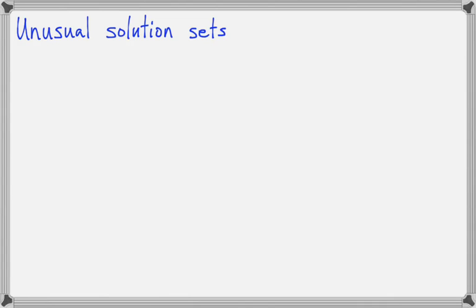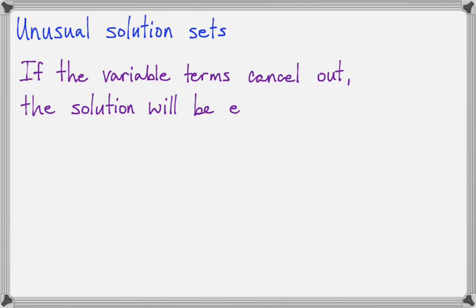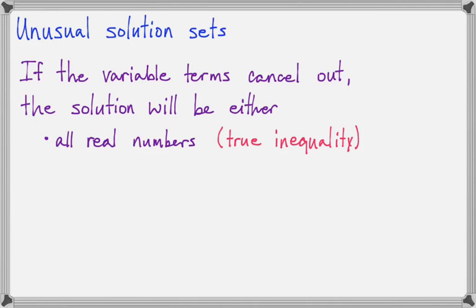In this lesson we're going to talk about unusual solution sets for inequalities. Here's the deal: if you're solving an inequality and your variable terms cancel out, then the solution will either be all real numbers in case you get a true inequality, or no solution, which you'll have when you get a false inequality.